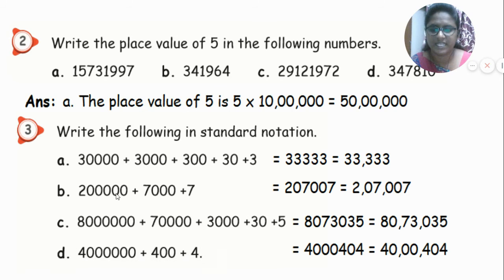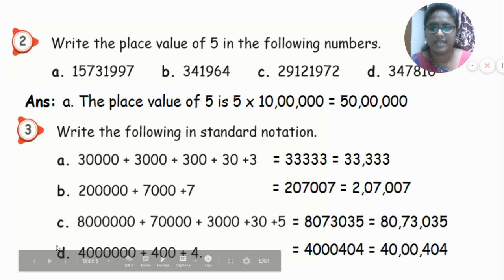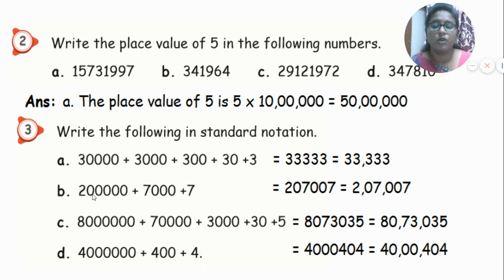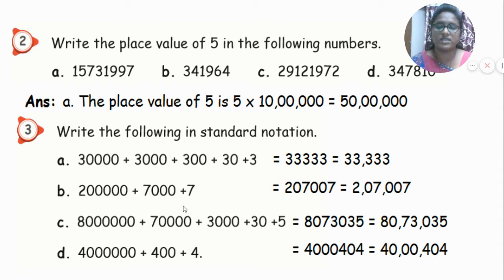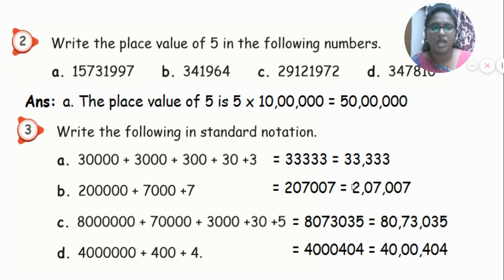For the next: ones, tens, hundreds, thousands, ten thousands, lakhs — the value is two lakhs, seven thousand and seven. Once, tens, hundreds, comma, thousands, ten thousands, comma, lakhs — two lakhs, seven thousand and seven.